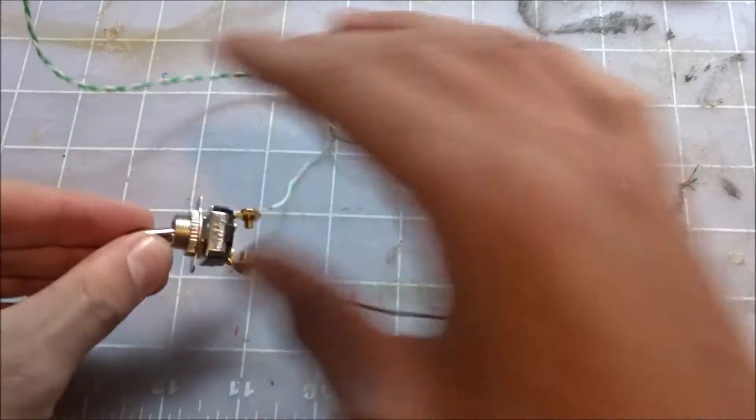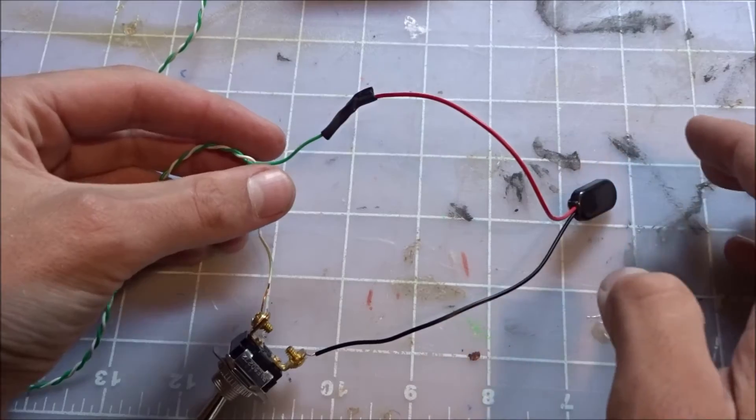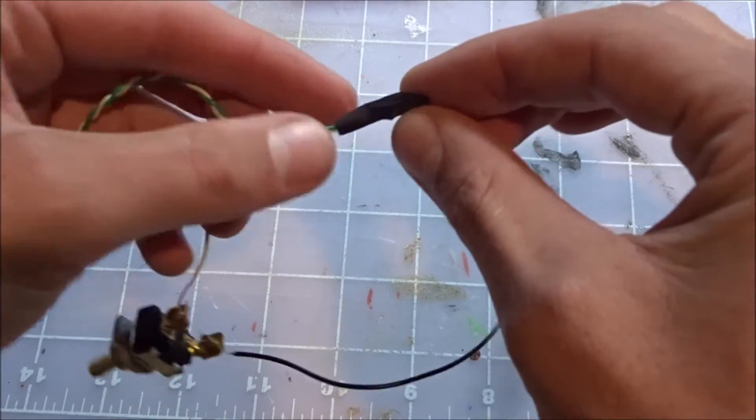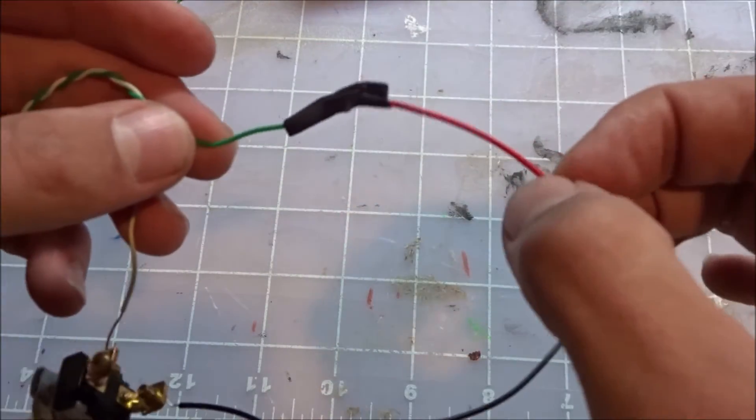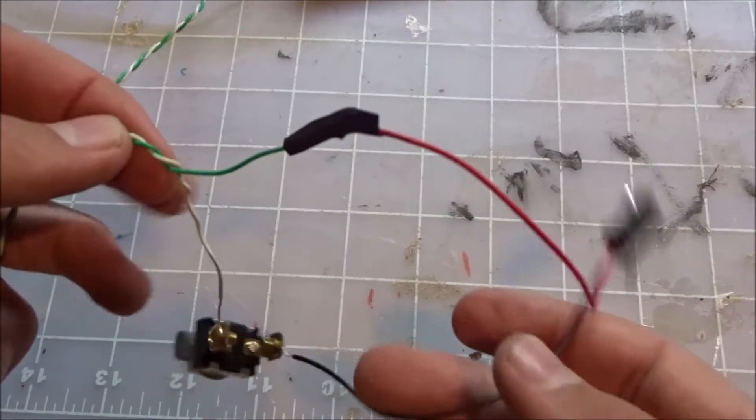And then when I switch this, if I have a 9-volt battery here, it turns on the little motor. I would advise everyone to make sure you have the proper size heat shrink tubing. Although it does shrink a lot, I bought heat shrink tubing that's just a little too big for this really small wire. So there's a little bit of excess. It shouldn't matter too much.